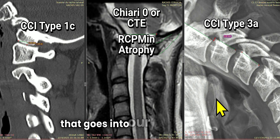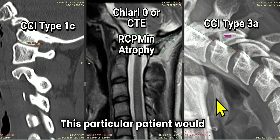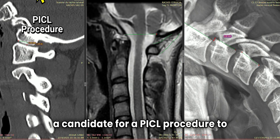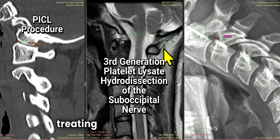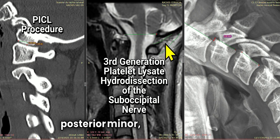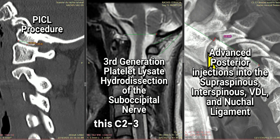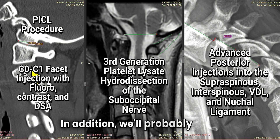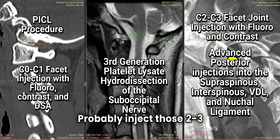So as you can see, there's a lot that goes into our pre-screening and a telemedicine evaluation for patients to try to see if we can help them. This particular patient would be a candidate for a PICL procedure to address this skull sliding type CCI 1C. They would also be a candidate for treating the suboccipital nerve to help this atrophy of the rectus capitis posterior minor. And then also a candidate for tightening down the ligaments back here to help this C2-3 problem. In addition, we'll probably inject the C0-1 facet joint under digital subtraction angiography, fluoro contrast confirmation, and probably inject those C2-3 facet joints as well.